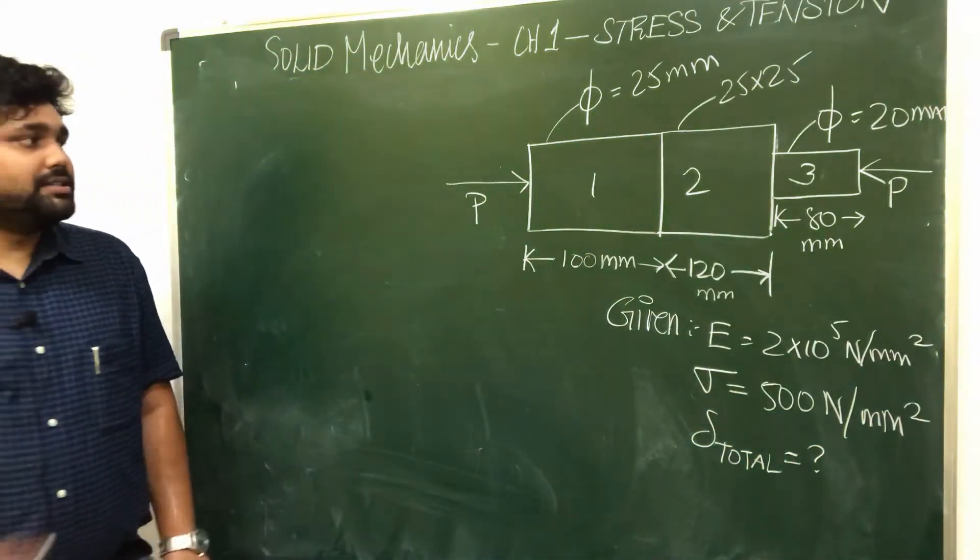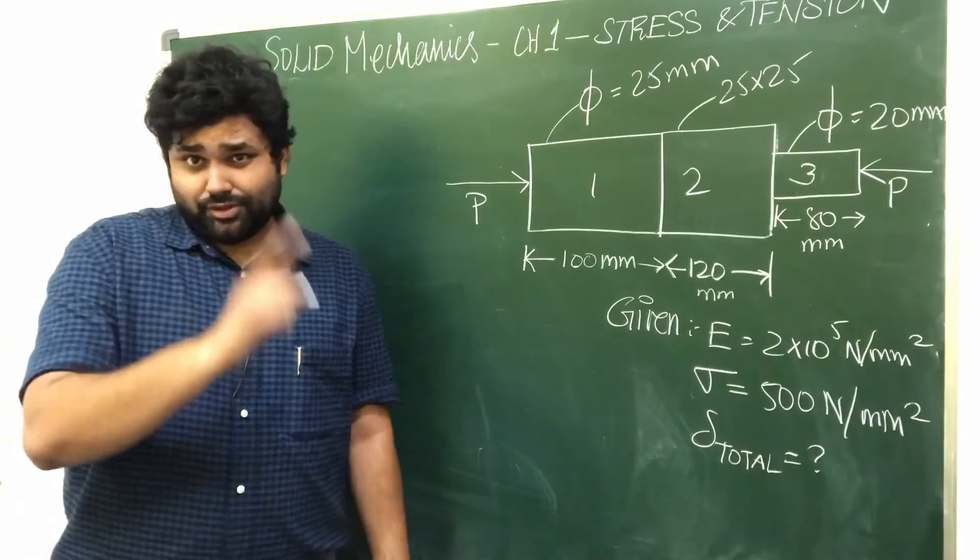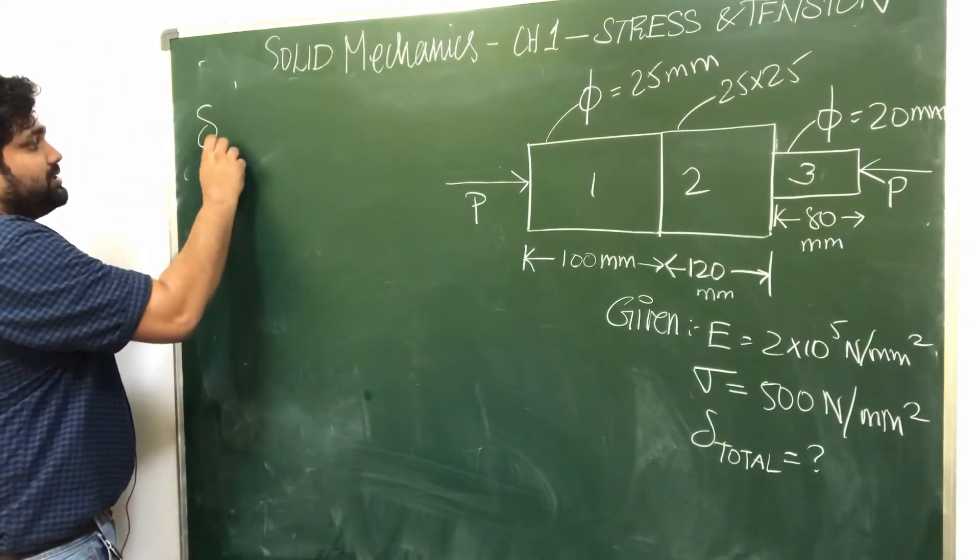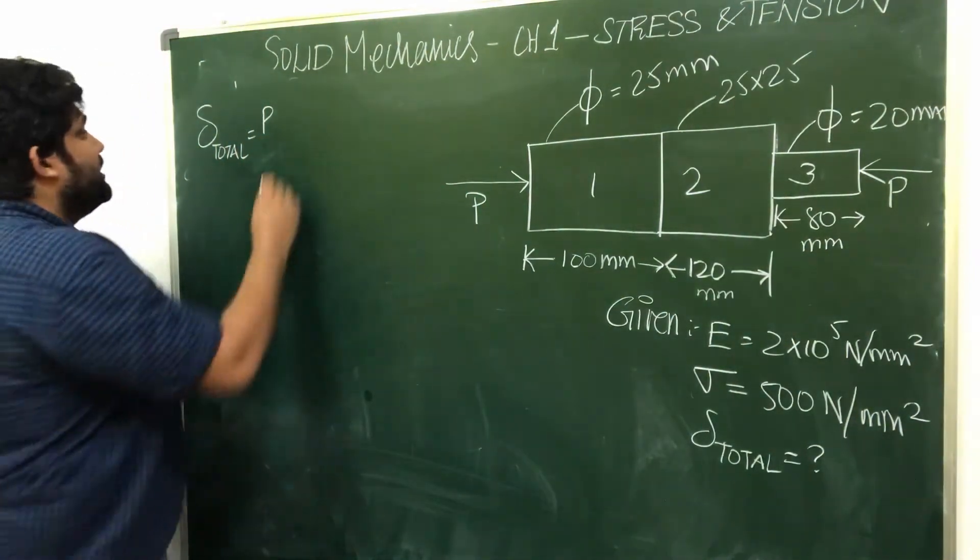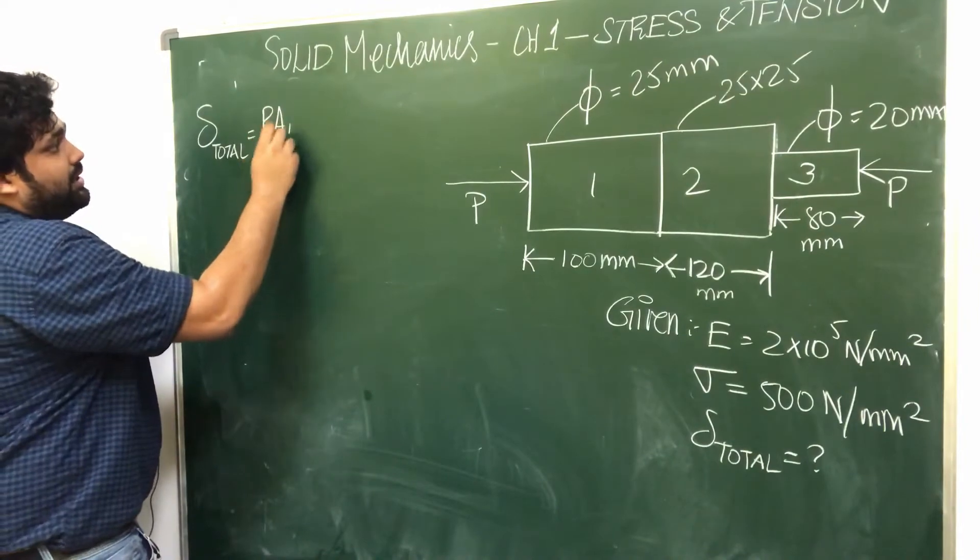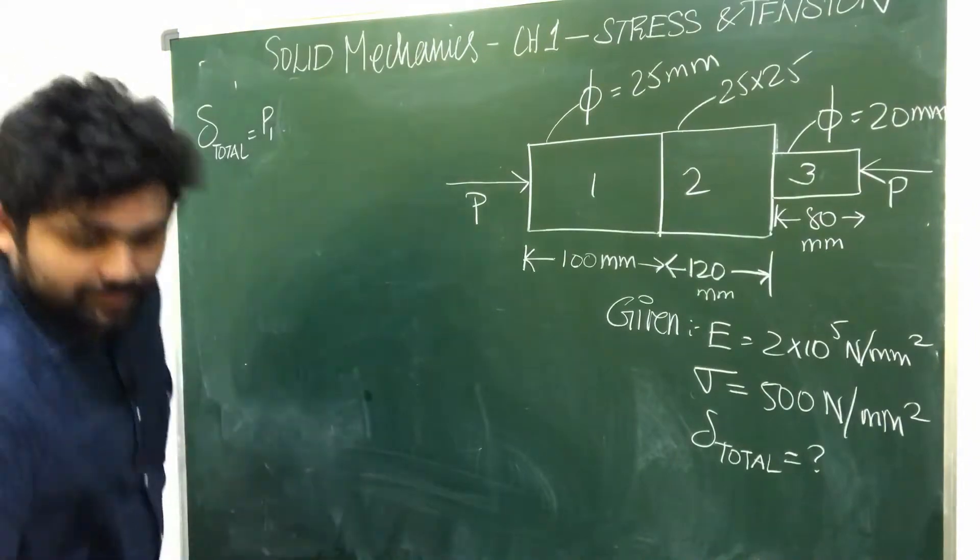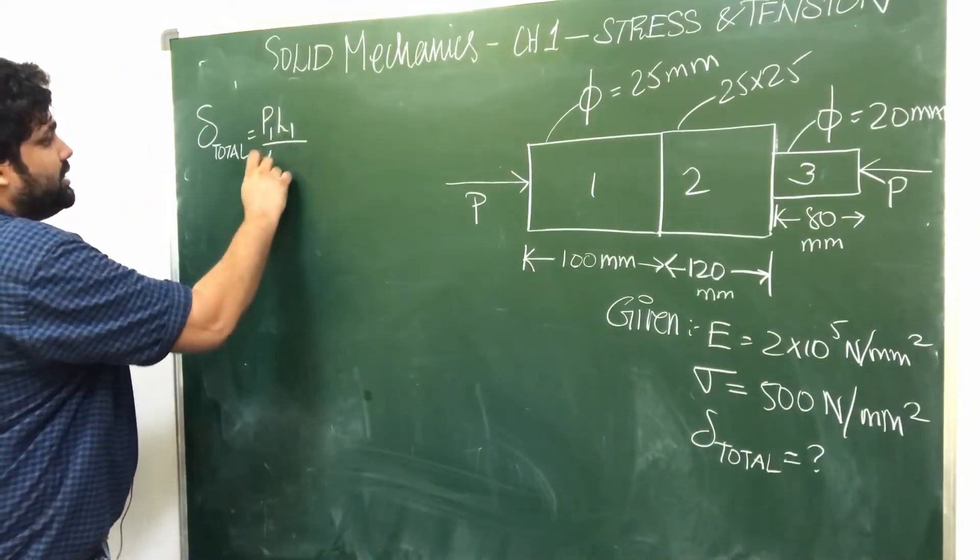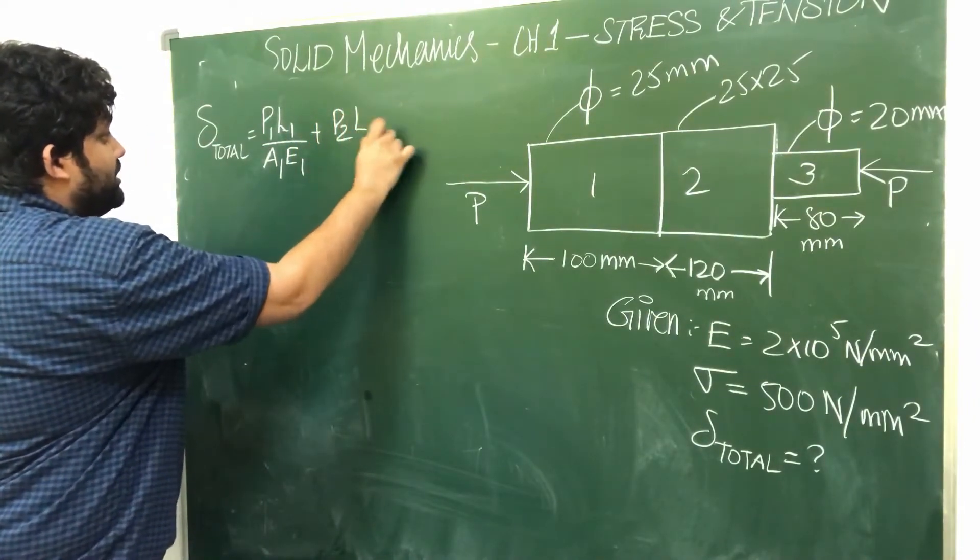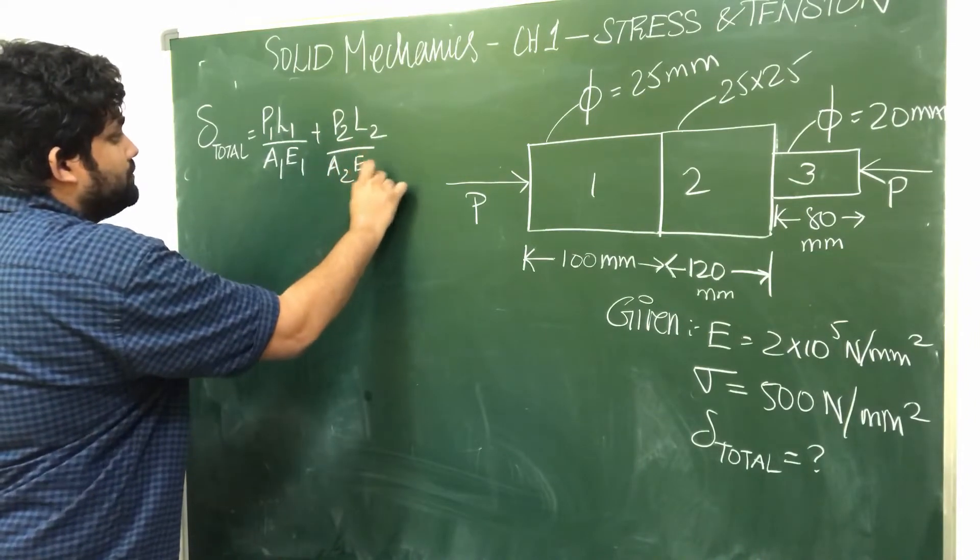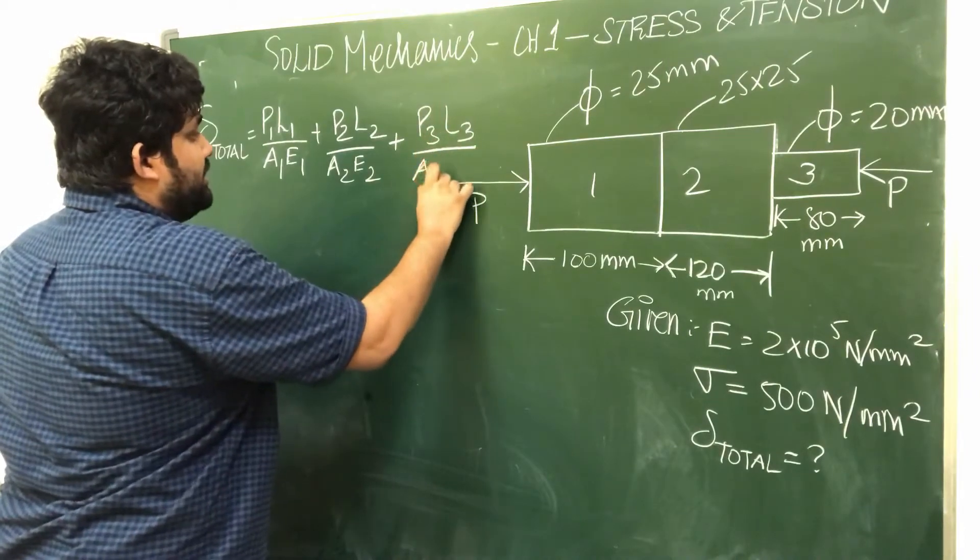Total elongation is sum of 3 deflections. So first bar deflection is P1L1 by A1E1, plus second bar deflection P2L2 by A2E2, plus third bar deflection P3L3 by A3E3.